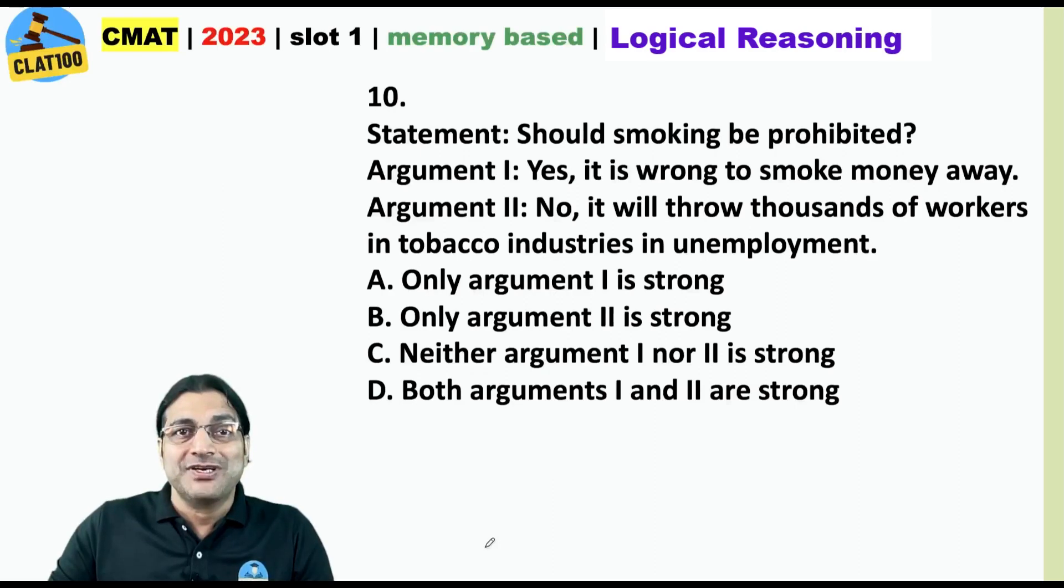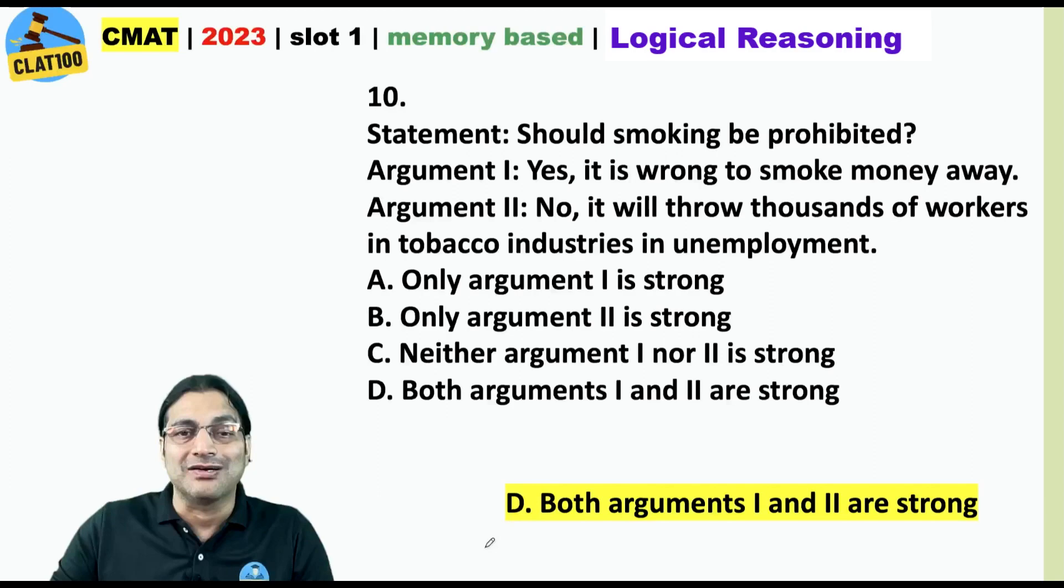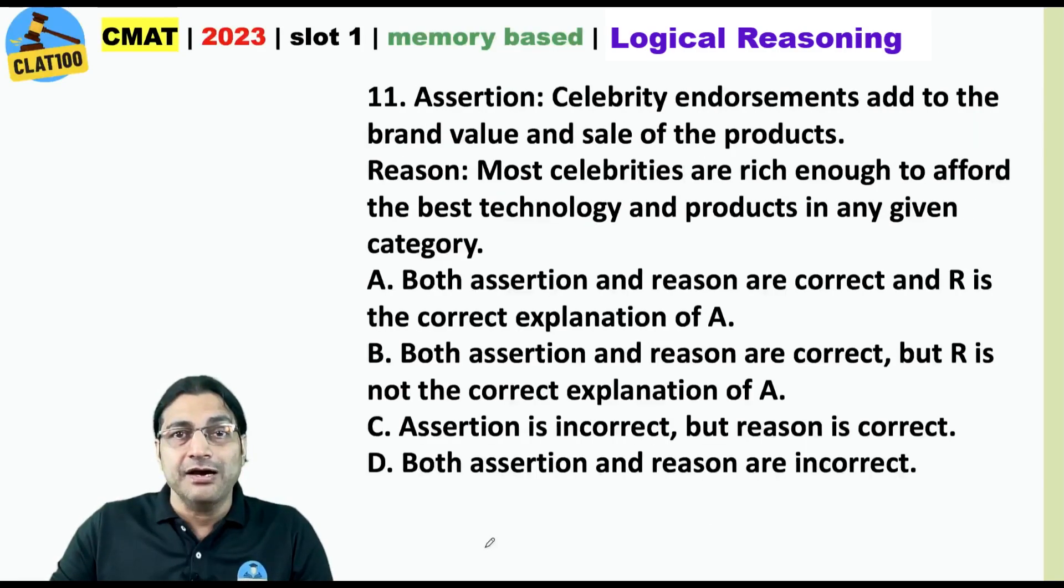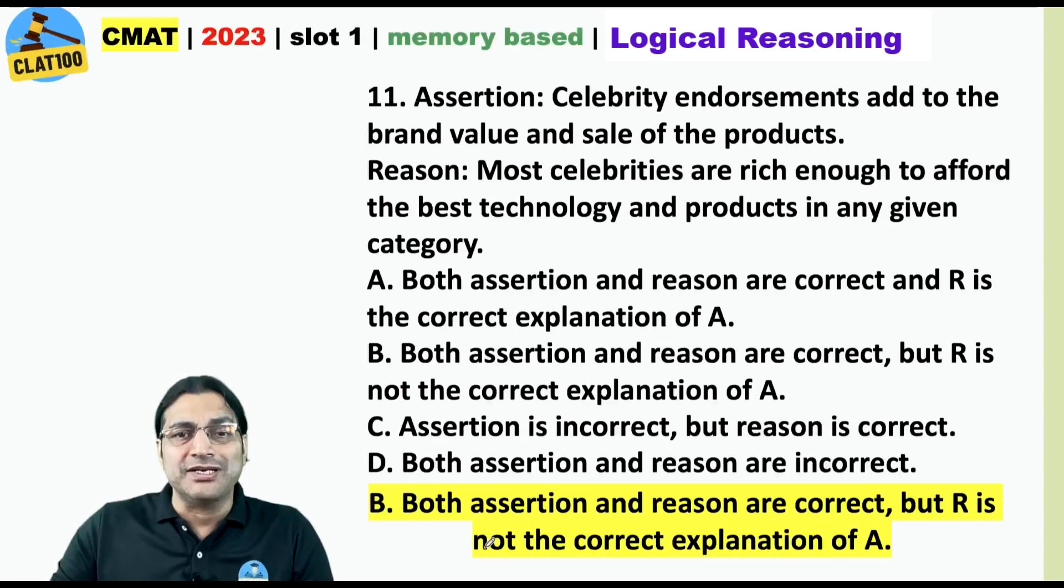Should smoking be prohibited? What do you think? How many of these two arguments are strong? We believe that both are strong. What about this one? For 0 is your answer and here both assertion and reason are correct but R is not the correct explanation of A cannot be also.